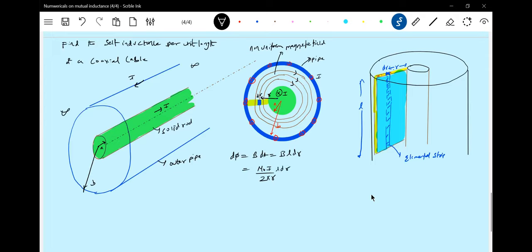Let's go for the limits: μ₀IL/2π. Now what should be the limit? The limit should be from a to b.